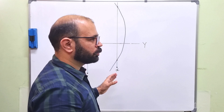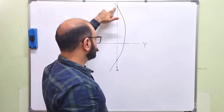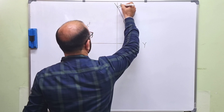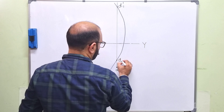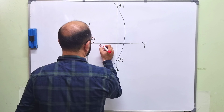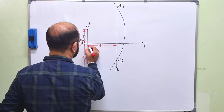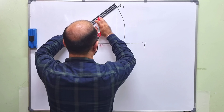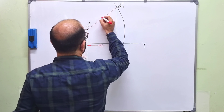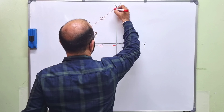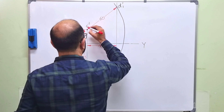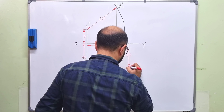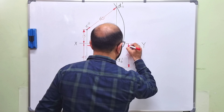This means there are two possibilities. The front view can be at one intersection point or the other. We name the first possibility D1' and the second D2'. The top view of D is 40mm in front of VP, so it lies 40mm below the XY line.